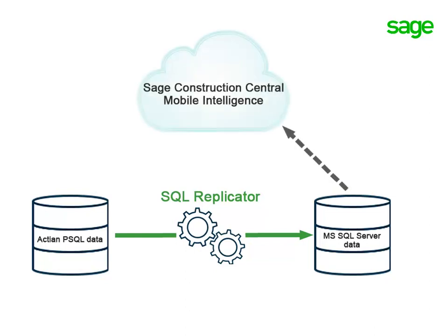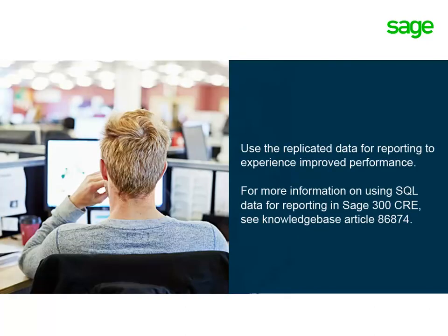Sage SQL Replicator lays the foundation for accessing your data through Sage Construction Central for mobile reports and mobile dashboards. Even if you don't use the mobile intelligence applications, using the SQL Server data for reporting results in improved processing performance. To find out how to use the SQL data for reporting in your on-premise Sage 300 Construction and Real Estate applications, see Knowledge Base Article 86874.